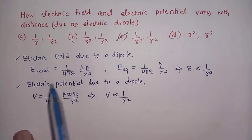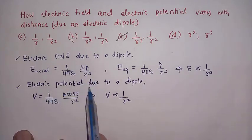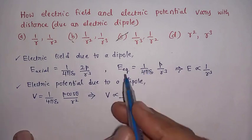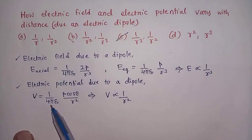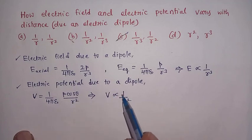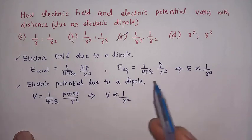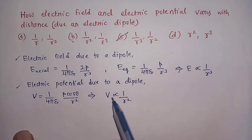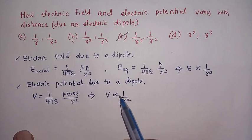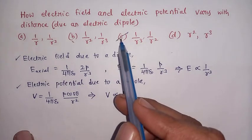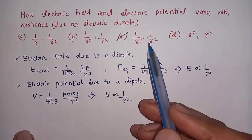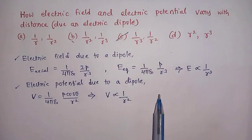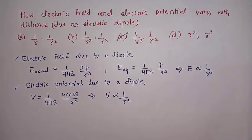The electric potential due to a dipole is given by 1 divided by 4 pi epsilon naught times p cos theta divided by r squared. So V is inversely proportional to r squared. Therefore, the electric field due to a dipole is inversely proportional to r cubed, while the electric potential due to a dipole is inversely proportional to r squared. The answer is: one by r cubed and one by r squared respectively. This is useful for multiple choice questions.